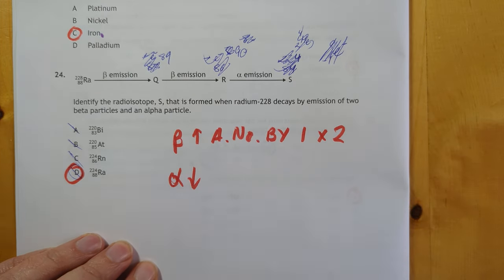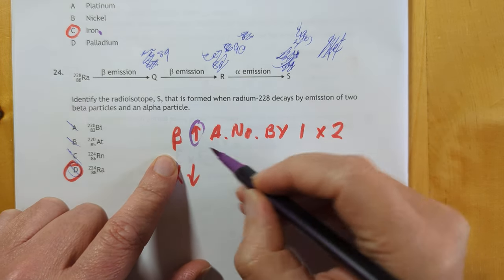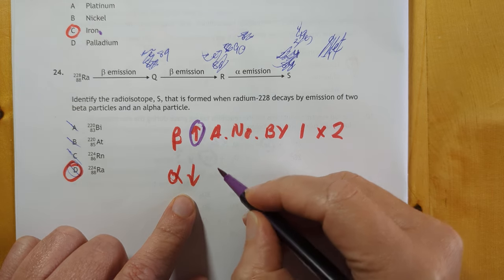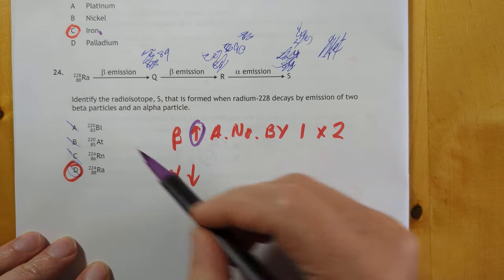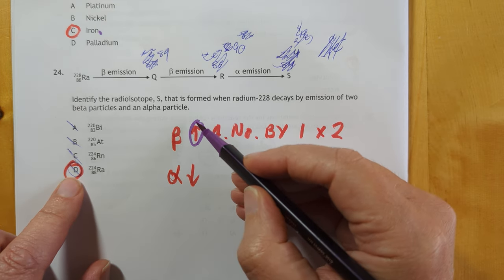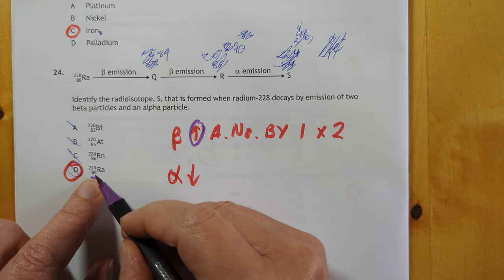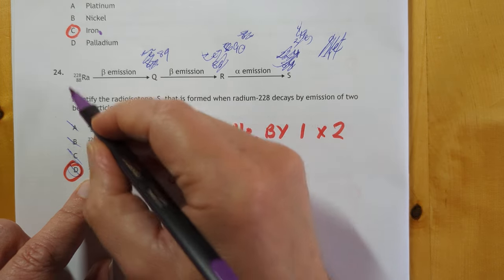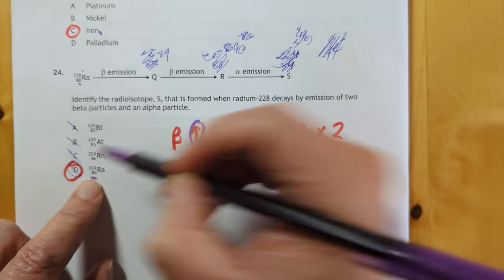24 is a tricky one but it's a nice one to do with radioactive decay. When you have beta decay you increase the atomic number by 1 and when you have alpha decay you drop the atomic number by 2 and you drop the mass number by 2. So if you've got 2 betas that's going to bump up the atomic number by 2 and then 2 alphas is going to drop it back down to where it started which means the only one it can possibly be is that 88 matches with that one and that one matches with a drop of 4 in the mass number as well. That's your answer.